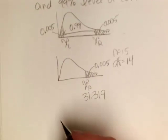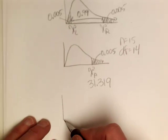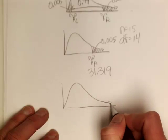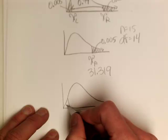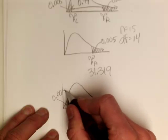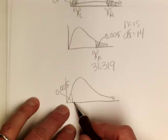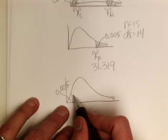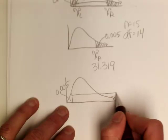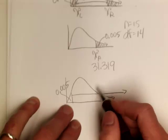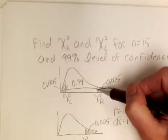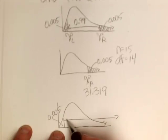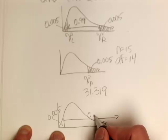Now to get the lower critical value, I again go to the chi-square table. I know I have .005 area in the upper tail, but the lower critical value is not going to be negative 31.319. I have to read in the other direction — it's going to be .99 plus .005 more, so going that way I have .995.